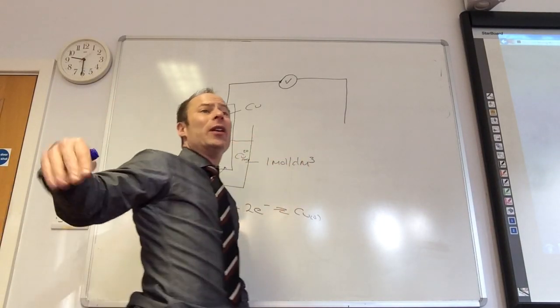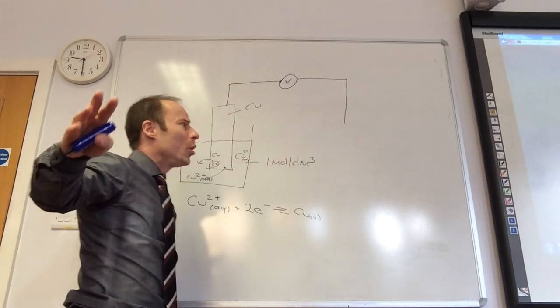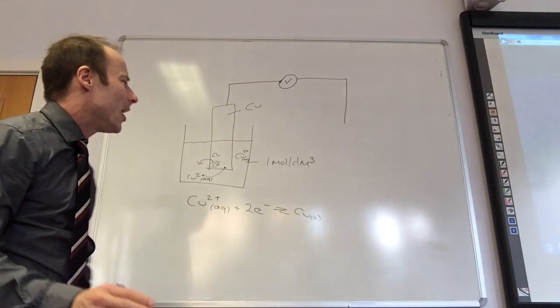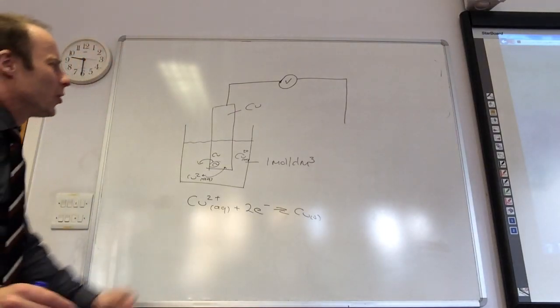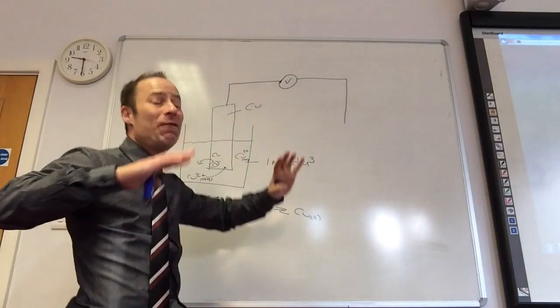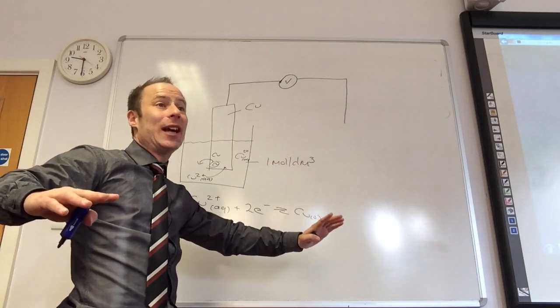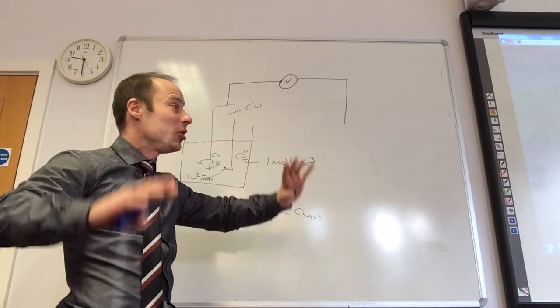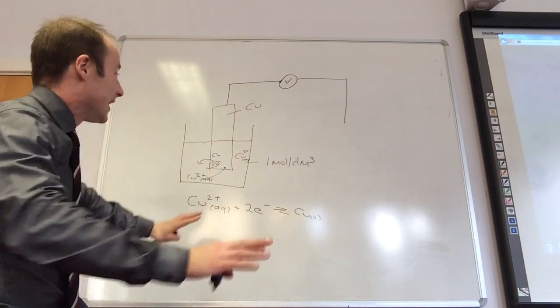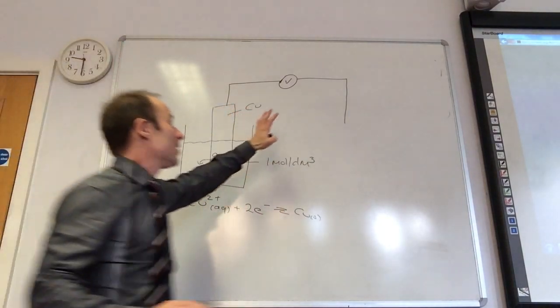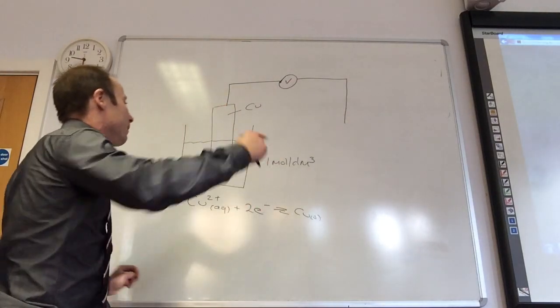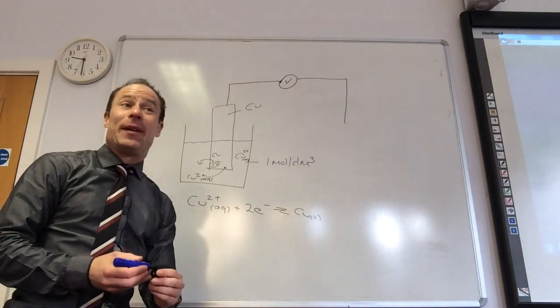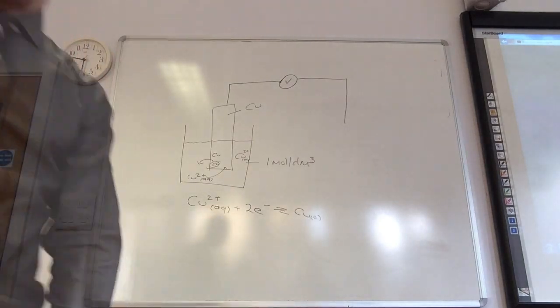What I do is I use what we call a standard hydrogen electrode, which we're going to talk about now. We set the voltage of that electrode as zero. As chemists we say the voltage due to that electrode is zero, and so whatever I measure on this one is going to be purely due to copper.